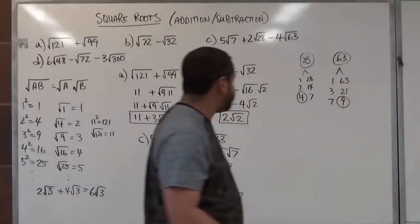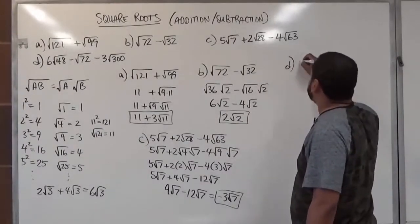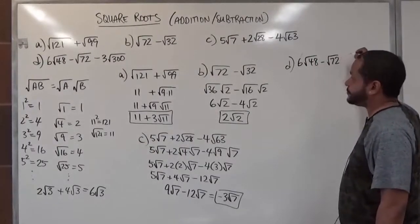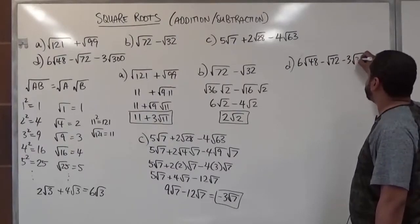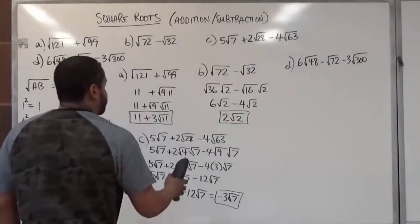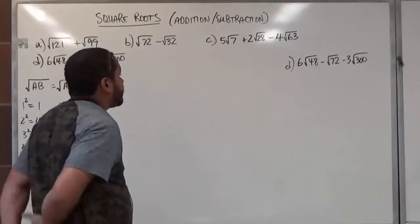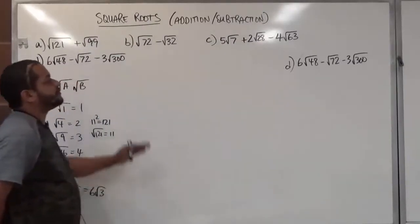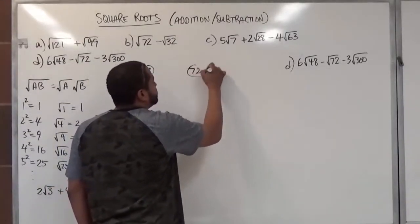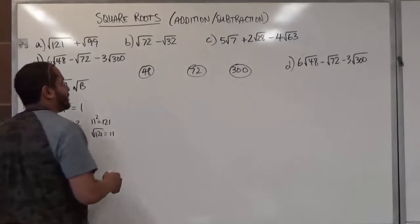Now let's move on to Part D, the biggest problem: 6 radical 48s minus the square root of 72, minus 3 times the square root of 300. I'm going to clear some space so we can factor each number. We need to break down 48, 72, and 300, find the largest perfect square in each set, and then work from there.